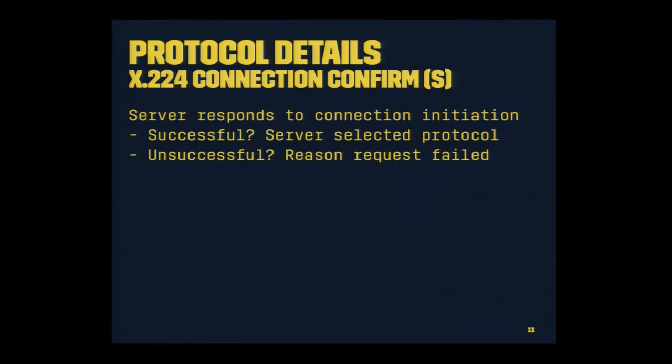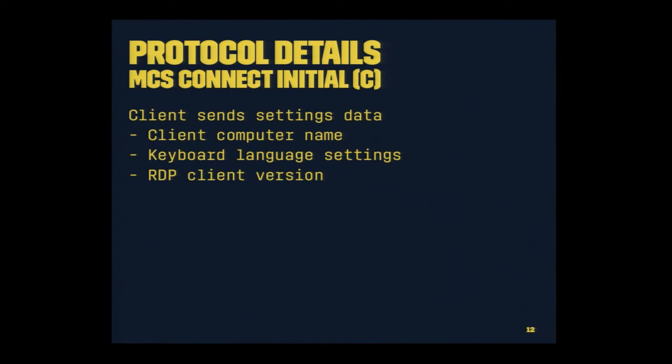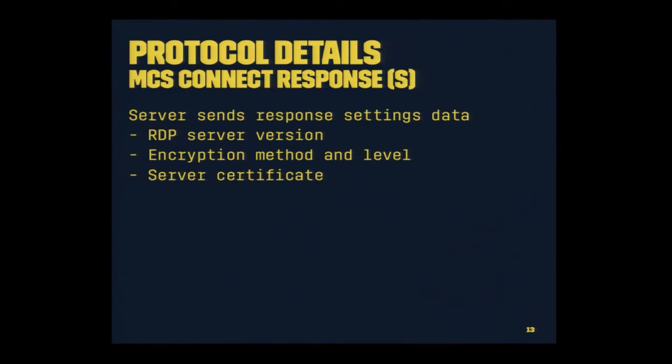The second PDU is a connection confirmation from the server to the client — the server responds yes or no, and if accepted, indicates which protocol was selected. If unsuccessful, it explains why. The most interesting sequence is the first PDU of the basic settings exchange: the MCS Connect Initial PDU. The client sends its computer name, keyboard language settings, and the version of RDP it's running. The server responds with its RDP version, the encryption method and level chosen for the connection, and server certificate information.